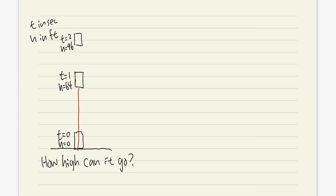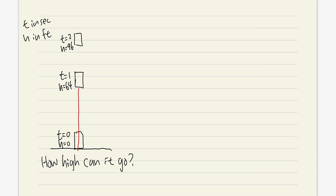In order to answer that question, we need an equation to work with. Whenever we toss anything into the air on Earth, it's always a quadratic equation — a parabola. So let's use the general parabola. In this lesson I'm just going to work out the algebra and show how to come up with equations from the given data. No calculus yet.